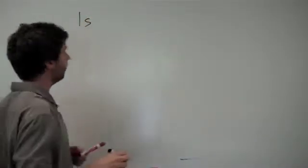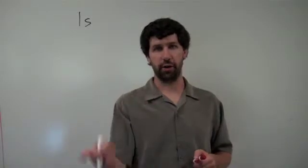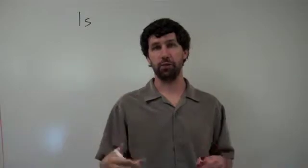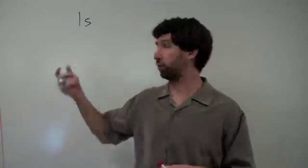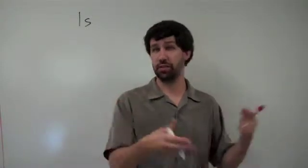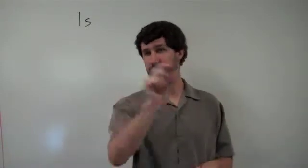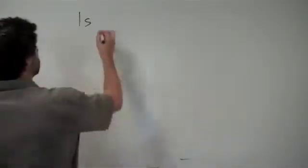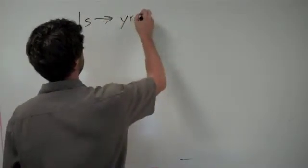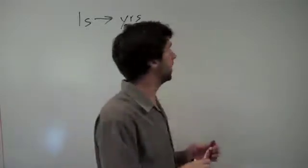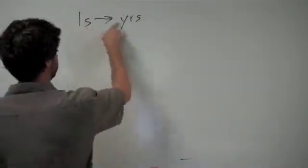We're going to start out with one second. What I want to know is how many years are there in one second? Now this is a little bit of a ridiculous question, but it's a conversion problem where we can look at how to convert from seconds into years. So instead of saying one second, I want to be able to say some small number of years. One of the things we want to try to do is to diagram the path that we're going to take — how am I going to get from seconds to years?